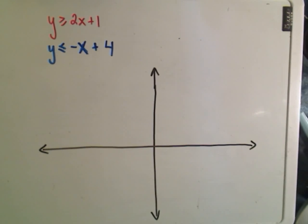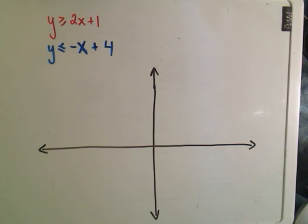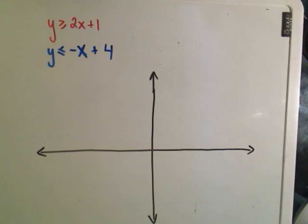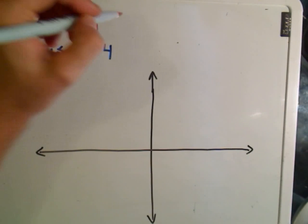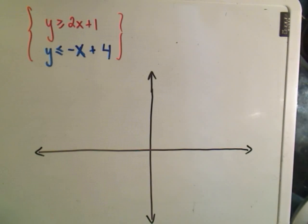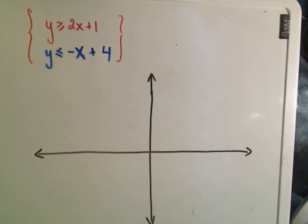So in this one I'm going to graph the inequality y greater than or equal to 2x plus 1, and then also y less than or equal to negative x plus 4, and we're looking for the solution to the system. Okay, so it's going to have to satisfy both inequalities.